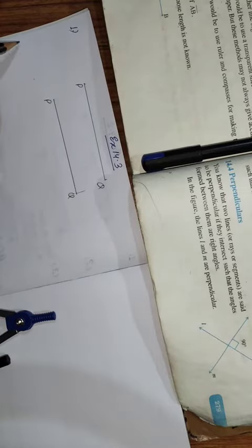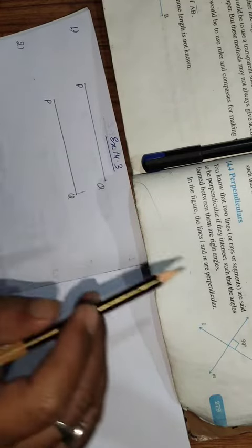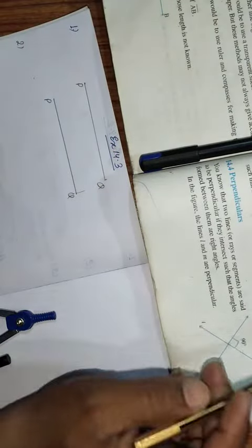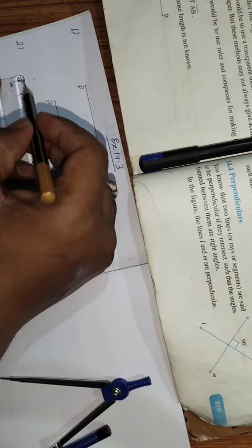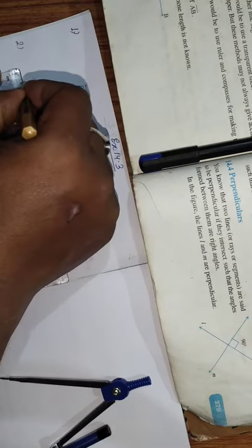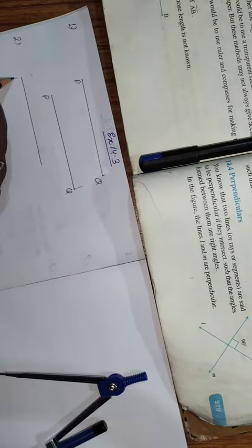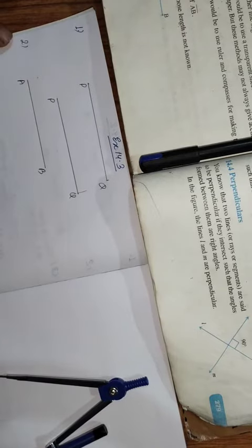Same length. Then we have question number 2. Given some line segment AB, whose length you do not know. AB is given. We don't know the length of AB. I am drawing like this. AB. I don't know the length of AB.